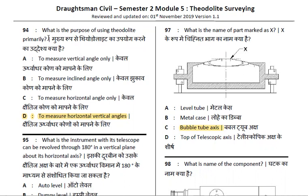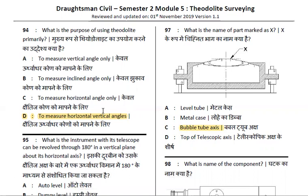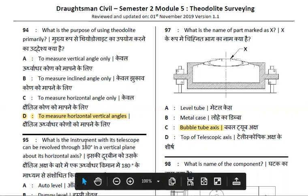What is the purpose of using the theodolite? The purpose of the theodolite is to measure the horizontal and vertical angles. Horizontal and vertical angles — that is the purpose.